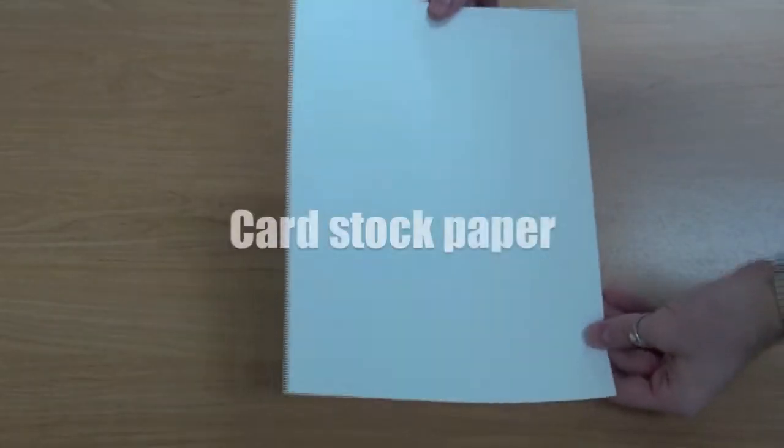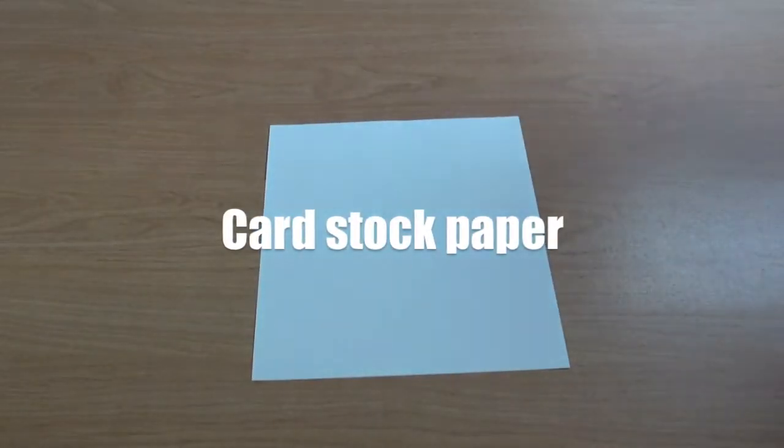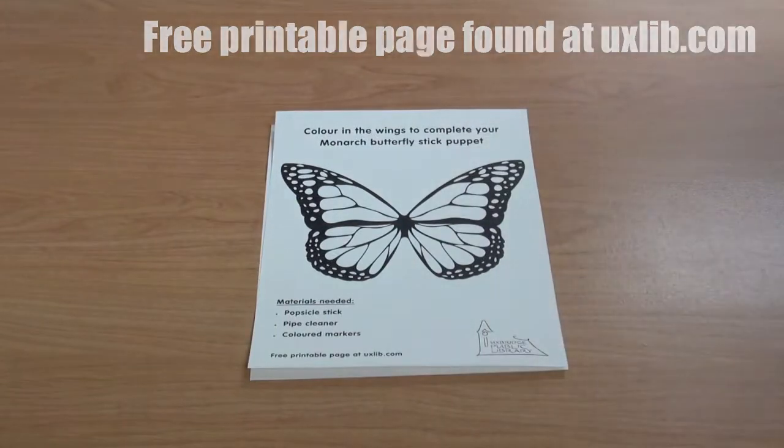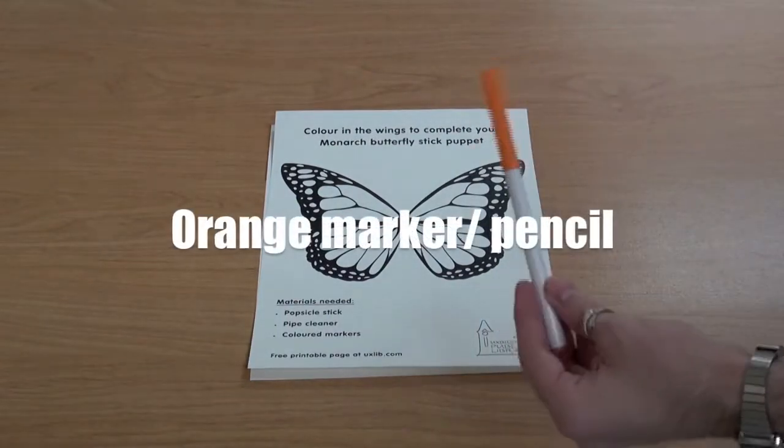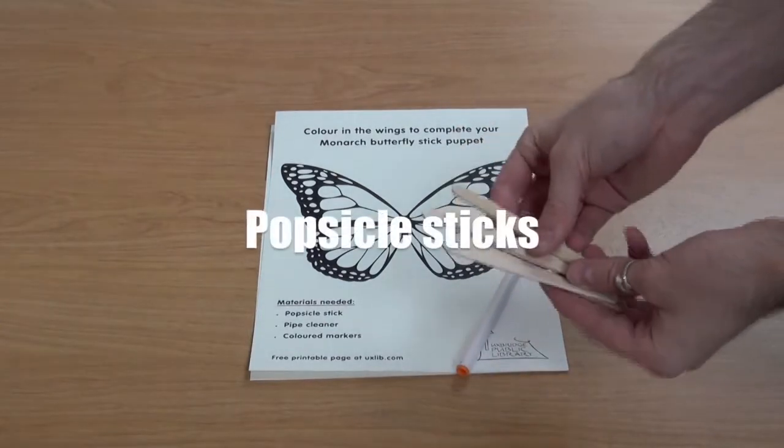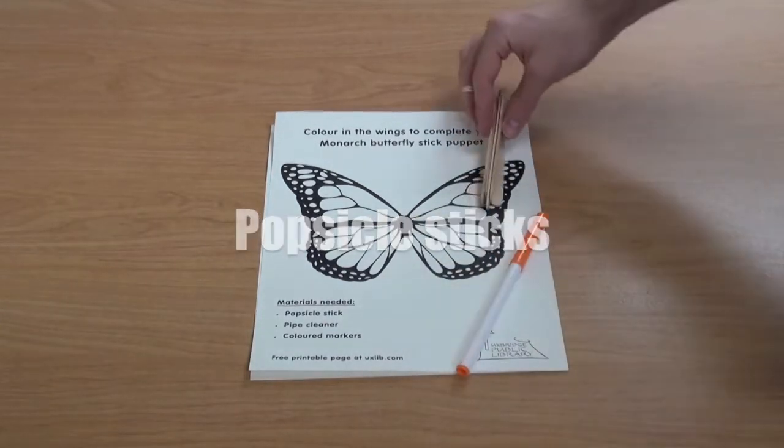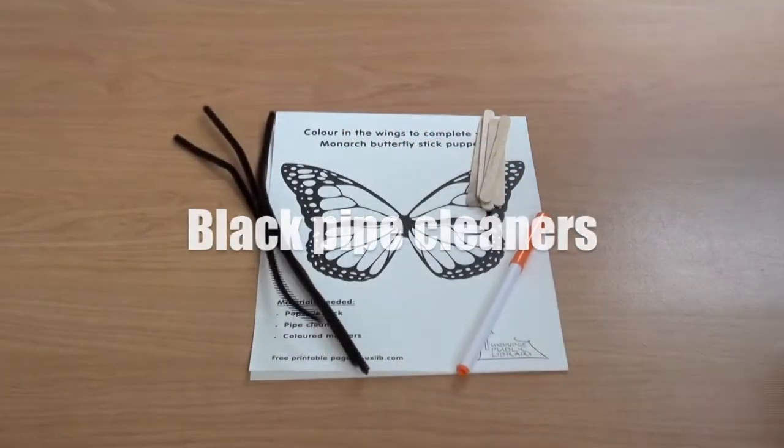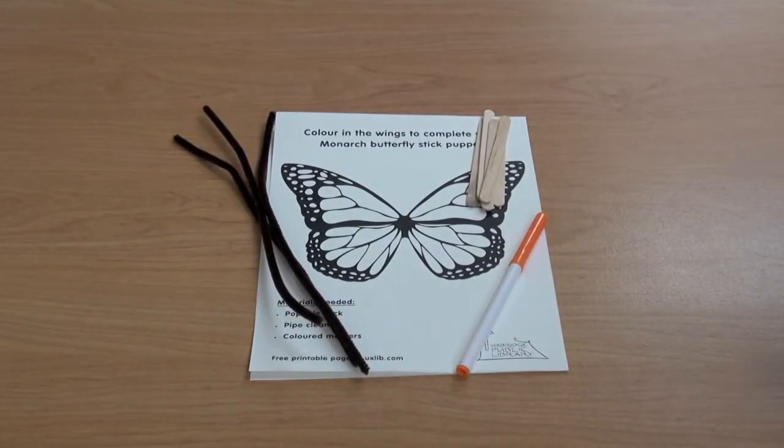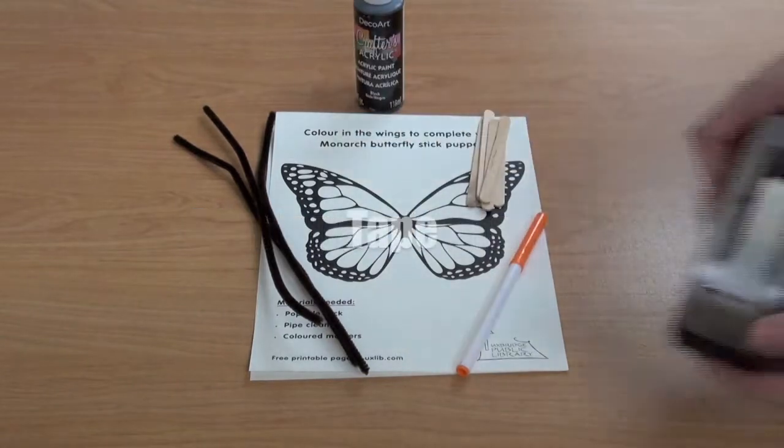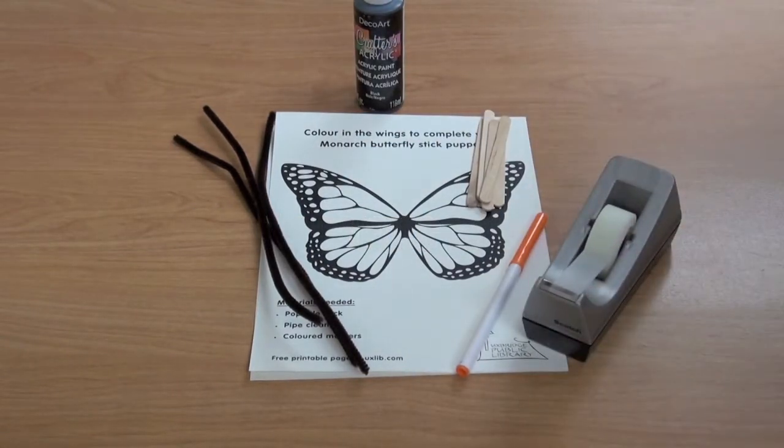The next project we're going to be working on is our butterfly puppets. What you will need is white cardstock and a free printable from the Uxbridge Public Library. We're also going to take an orange marker, popsicle sticks, black pipe cleaners, black paint or a black marker, tape, and scissors to cut it out.